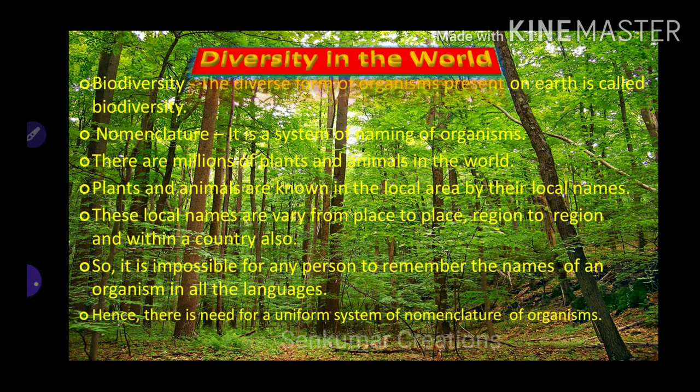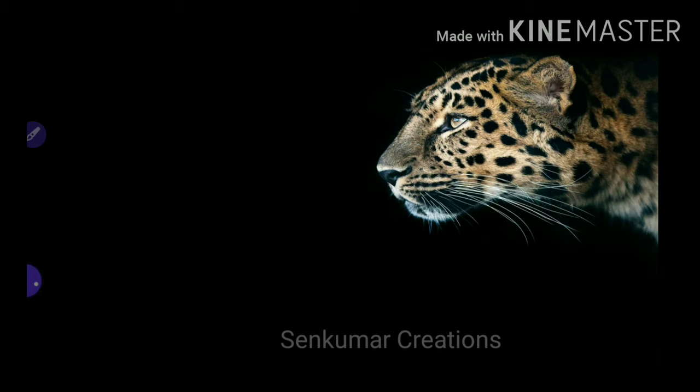Each organism in the world has an independent name according to their area, location, and country. The name of an organism may vary from one place to another, one state to another, one country to another. To avoid this confusion, a universally accepted naming system was introduced — that is called nomenclature.